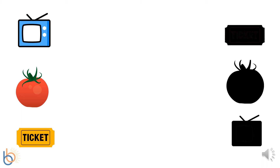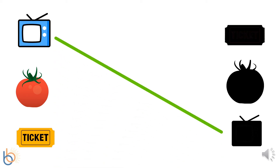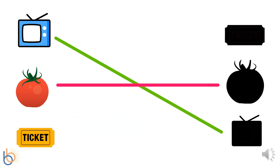I need your help matching these pictures to their shadows. These are all pictures that start with the letter T. Let's start with the television — can you find the shadow to match the television? Great job. Now help me find the shadow to match the tomato. Awesome. Now can you help me find the shadow to match the ticket? Great job matching all of these pictures to their shadows.